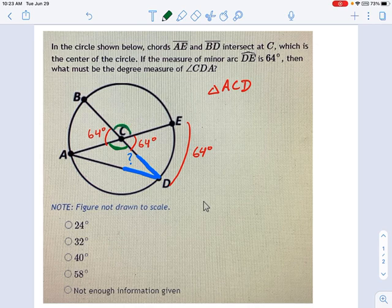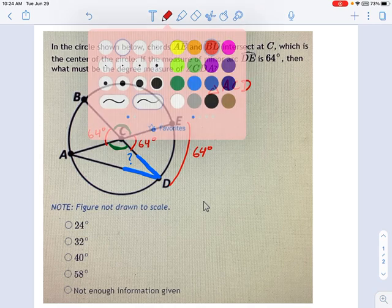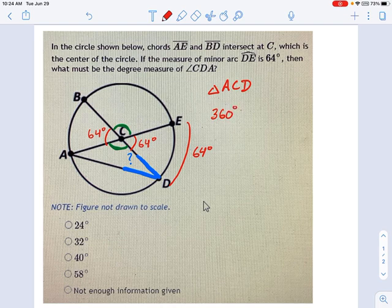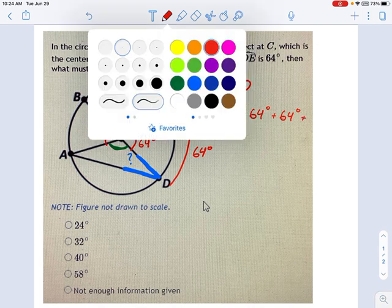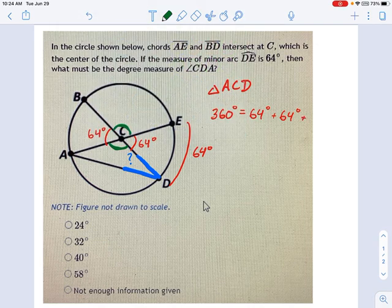See these two angles that I'm drawing in green? If you add up the two green angles and the two red angles, the result must be 360 degrees. So I'm going to say 360 degrees equals 64 degrees plus 64 degrees plus, let's just call that green angle X, plus X.